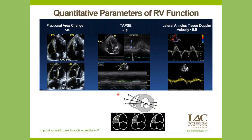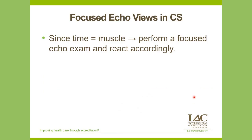The right ventricle should be quantitatively assessed as much as possible. Parameters associated with RV dysfunction include: fractional area change less than 35%, TAPSE measured at the lateral annulus in the apical four-chamber view of less than 16 millimeters, and S prime less than 10 cm/s — all per the guidelines for RV dysfunction.